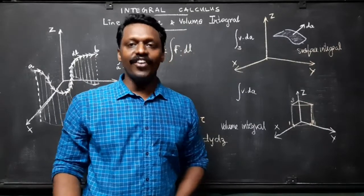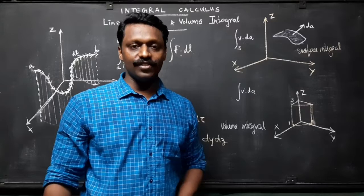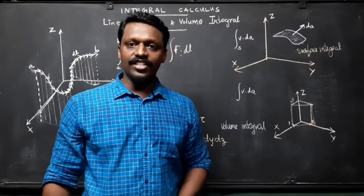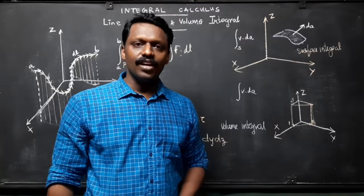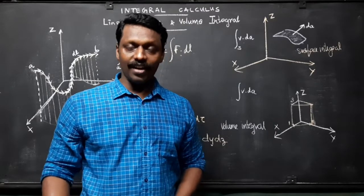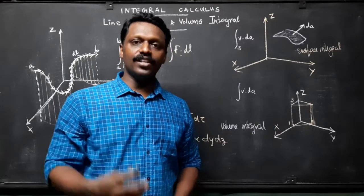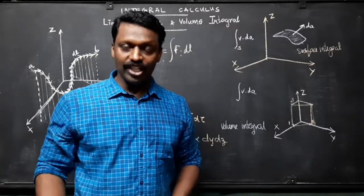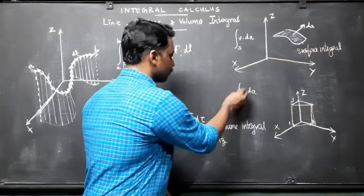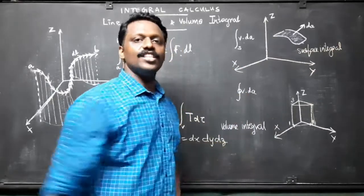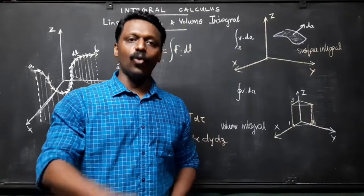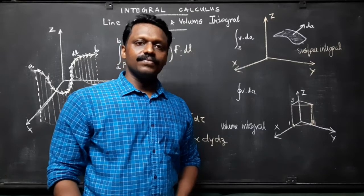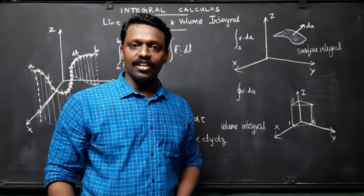There are of course two directions perpendicular to any surface, so the sign of a surface integral is intrinsically ambiguous. If the surface is closed, like forming a balloon, in which case we shall again put a circle on the integral sign, integral v dot da over a closed surface, then tradition dictates that outward is positive.